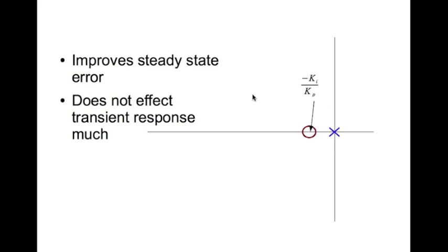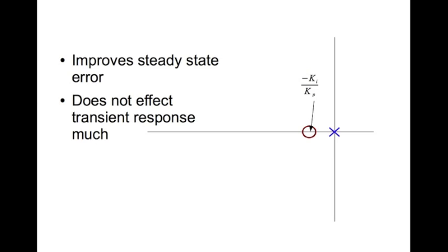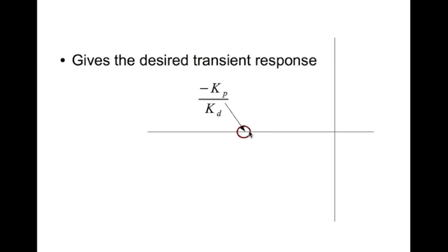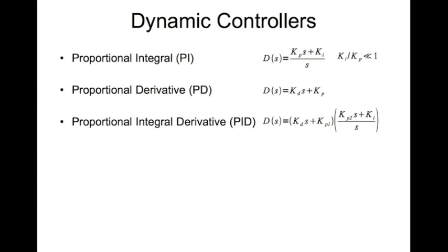The PI controller doesn't affect the transient response much — it just improves the steady-state error. For type zero systems, it brings the steady-state error to zero. The proportional-derivative (PD) controller has the transfer function kd times s plus kp, giving essentially a single zero. You use a PD controller to achieve the desired transient response — specifically, to make the root locus pass through your desired closed-loop poles in the complex plane.